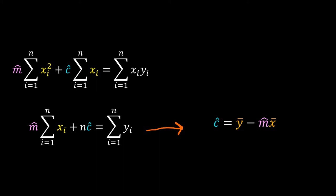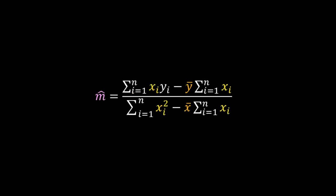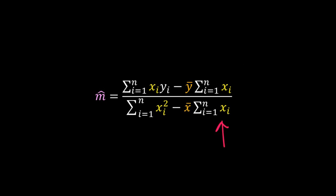We had the same equation for c in our earlier discussion on the least squares method. Now, replace ĉ in the first equation and solve for m̂ — I will skip the algebraic steps. Eventually, we get m̂ = (Σxi·yi − ȳ·Σxi) / (Σxi² − x̄·Σxi).